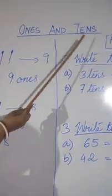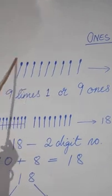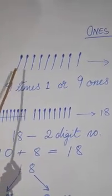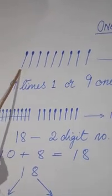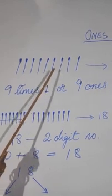Ones and tens. Now can you see here I have drawn something? These are math sticks. How many math sticks are here? 1, 2, 3, 4, 5, 6, 7, 8, 9.